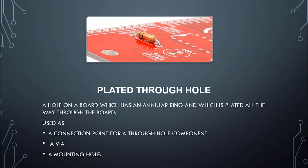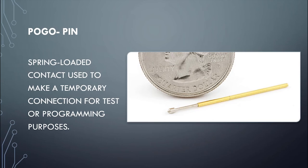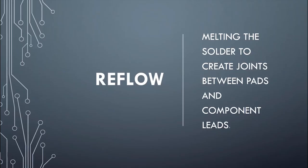Plated through holes are holes in a board with an annular ring, plated all the way through. They're used as connections for through-hole components, to make vias, and as mounting holes. Here we see a through-hole resistor sticking up on top of the board, and next to it a silver-colored plated hole used only for mounting. Pogo pins are small spring-loaded devices used to make connections for testing — if you suspect a short in your PCB, you would use these to figure out where the PCB has failed.